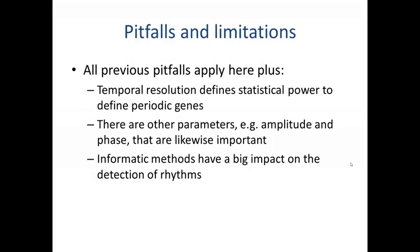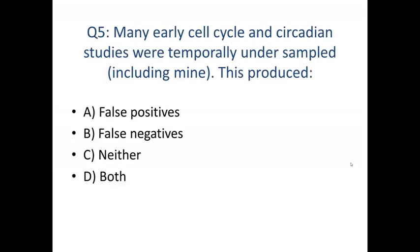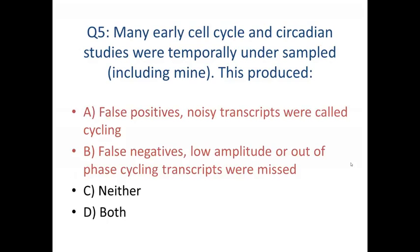The pitfalls of time series studies include all previous pitfalls, plus: temporal resolution defines your statistical power to detect periodic gene expression. Other important parameters in periodic processes include the phase of expression — for example, knowing something occurs in G1 versus G2 has biological meaning, whereas simply knowing it's periodic is less valuable. Informatic methods also have a big impact on detecting rhythms. Question five: many early cell cycle and circadian studies were temporally undersampled — this produced both false positives (noisy transcripts called cycling) and false negatives (low-amplitude or out-of-phase cycling transcripts missed).